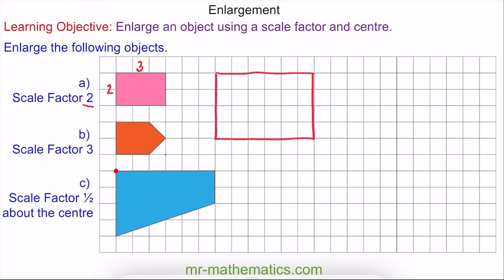For question B we have got a length of 2 and a scale factor of 3, so this is going to be enlarged to 6. This length of 2 here also becomes 6, because 2 times 3 is 6. This vertex on the object is one diagonal unit across, so I enlarge it by 3 diagonal units. I can do the same to the other side. So this is our enlarged pentagon.